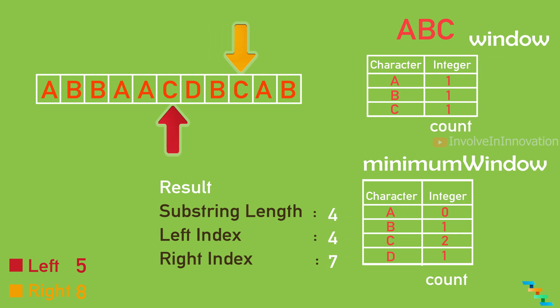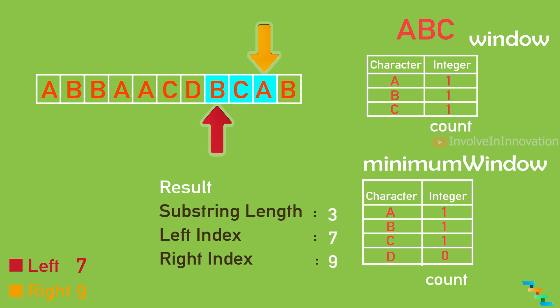Increment the right index — we get 'c', so c becomes 2, but a is 0, still not matching. Increment again and get 'a' — now a is 1, b is 1, c is 2. Remove the left index value 'c' — c becomes 1, and now a is 1, b is 1, c is 1, which matches. Remove the next left index value 'd' — a is 1, b is 1, c is 1, and the new substring length is 3. This is less than the previously found substring, so mark this new left and right index. The substring is 'bca'.